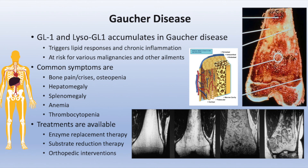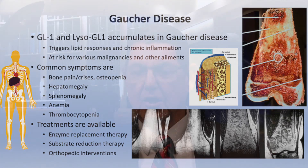In clinical practice, these bone abnormalities are primarily detected through MRI. The dark areas on MRI images can range anywhere from mild infiltration to bone involvement that appears similar to the pathology specimens described, illustrating the full spectrum of bone disease severity in Gaucher disease.